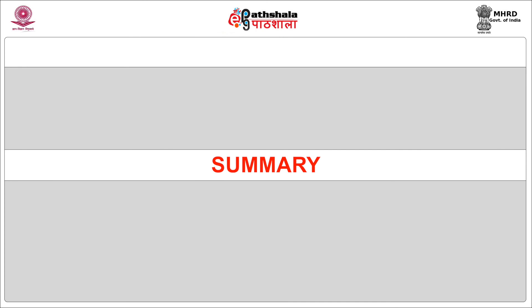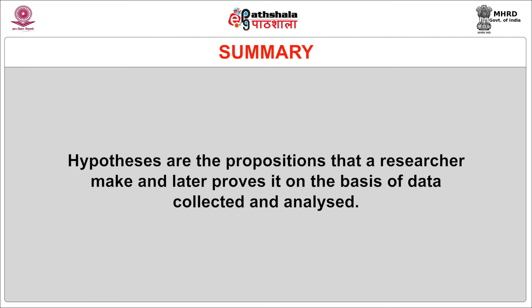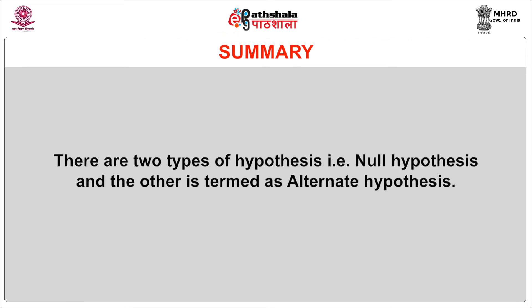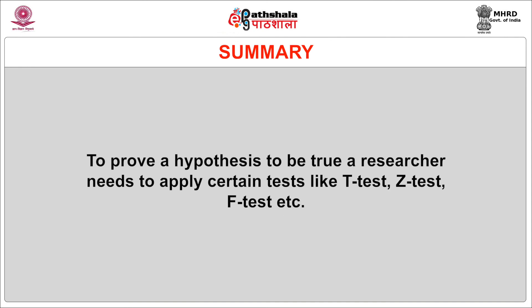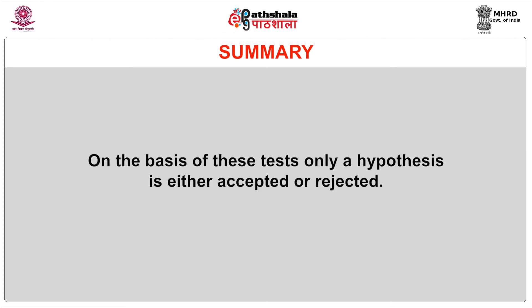Now, after having understood all the intricacies of hypothesis, it is time to summarize. The present module describes the meaning of hypothesis, which is the basis of almost every research, especially in social sciences. Hypotheses are the propositions that a researcher makes and later proves on the basis of data collected and analyzed. There are two types of hypothesis: null hypothesis and alternate hypothesis. To prove a hypothesis to be true, a researcher needs to apply certain tests like t-test, z-test, f-test, etc., and a proper set of steps are required to be followed. On the basis of these tests only, a hypothesis is either accepted or rejected. Thank you.